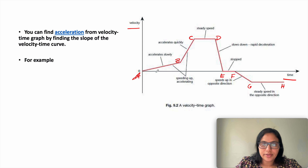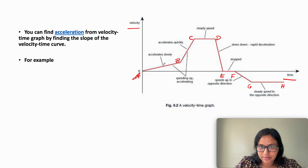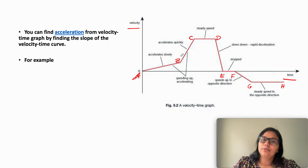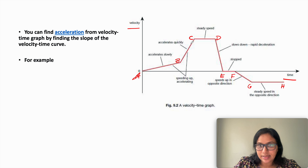From A to B the object accelerates slowly, but from B to C the slope is steeper, which means it accelerates more quickly.